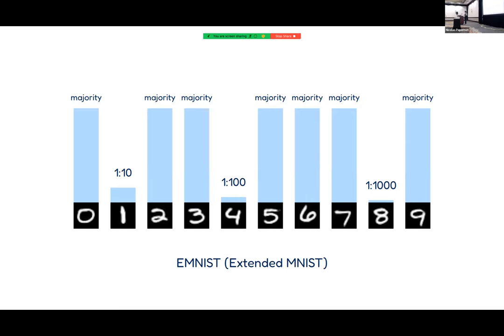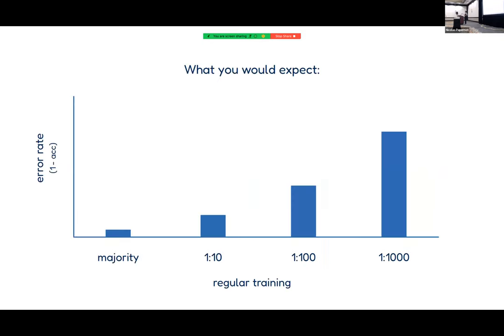What we did was take one balanced dataset — in this case Extended MNIST with about 240,000 images — and introduce artificial imbalances at random, with imbalance ratios between 1:10 and up to 1:1000. While this is quite extreme, in many real datasets, for example in the medical domain, such imbalances do exist.